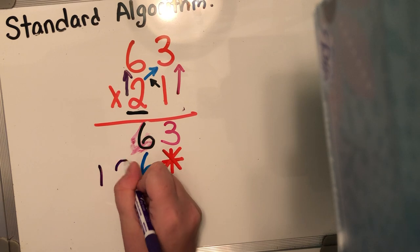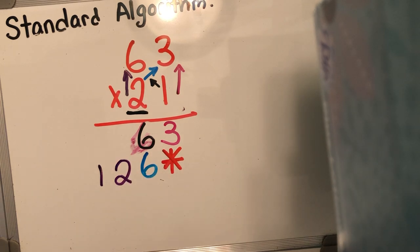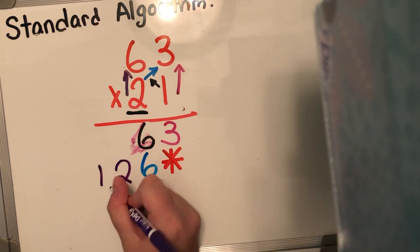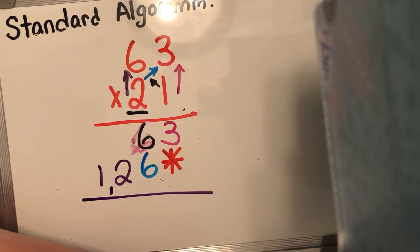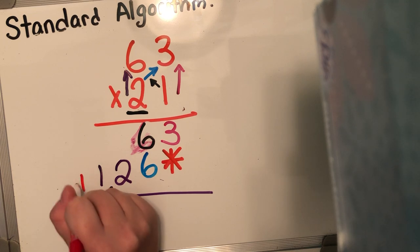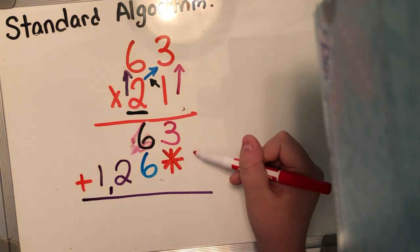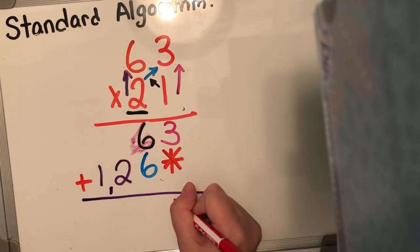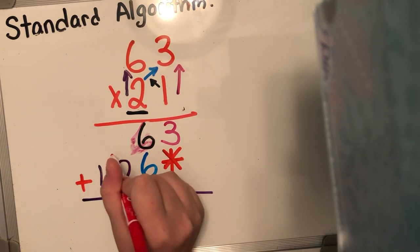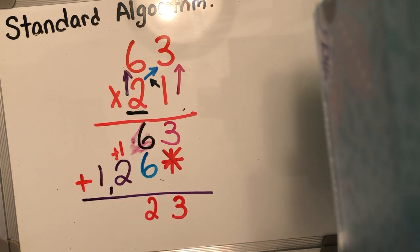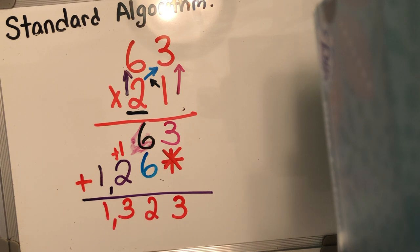So all I get to do is just write down the 12, which is really 1,260. Now the next step is that we are gonna add everybody together. Remember, this is a zero. So three plus zero is three. Six plus six is 12, carry that one. Two plus one is three. And one is by himself. So 63 times 21 is gonna give me a product of 1,323.